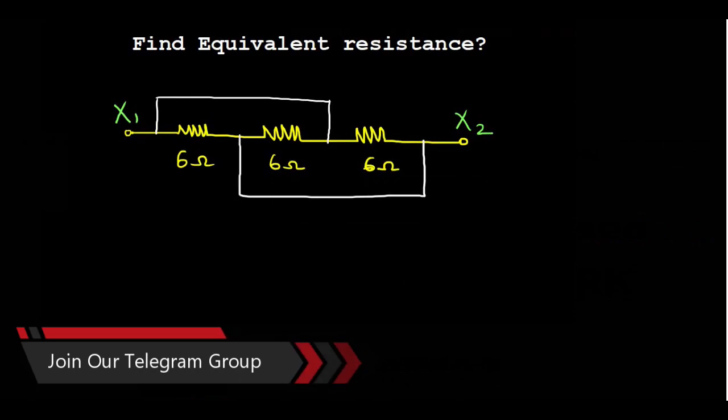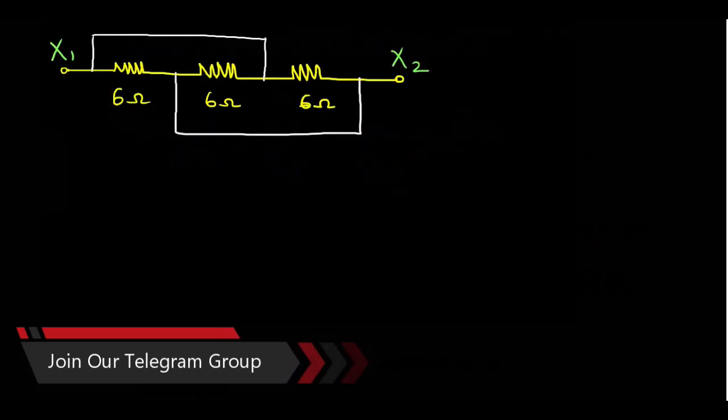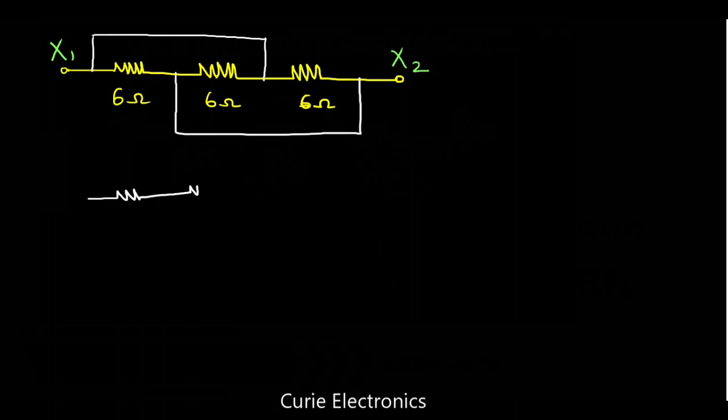So let us solve. We have three resistors. All are 6 Ohm. Now, this is X1 and the rightmost one is X2. And there are two short points there.